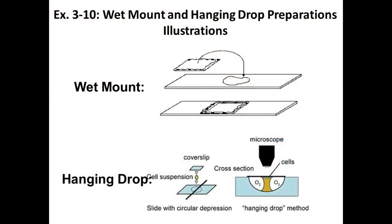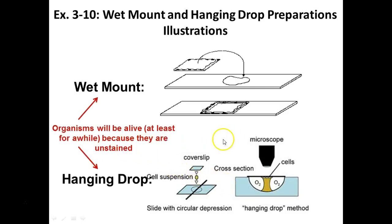For wet mount or hang drop: a wet mount is just a liquid — whether it be broth or water with your bacteria added to it and cover-slipped. You run into some problems with wet mounts. The hang drop is a little more difficult, but I always find you get the best results. The organisms will be alive for at least a while since they're unstained, though they're not going to stay alive forever.